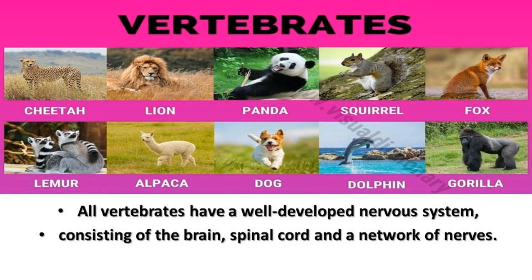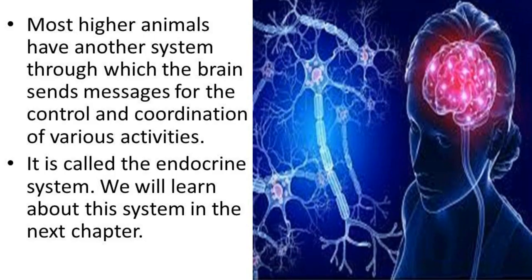All vertebrates have a well-developed nervous system — for example, lion, fox, human being, dog, and others. The brain, spinal cord, and the network of nerves make up this system. Most higher animals also have another system through which the brain sends messages for the control and coordination of various activities.